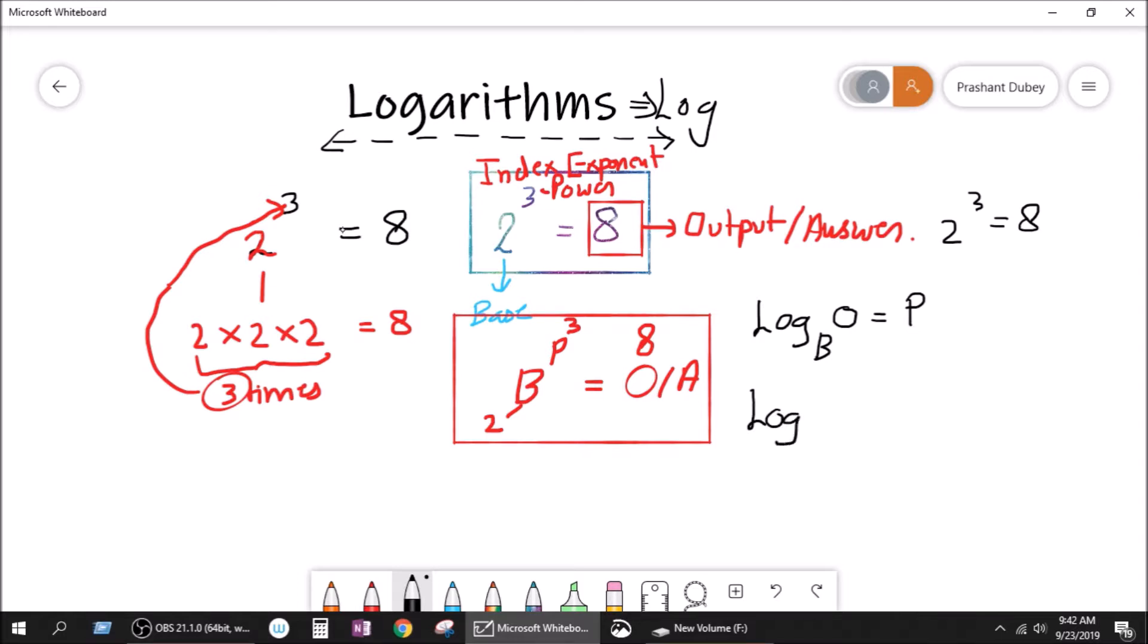Now, we can say log. What is the base? The base is 2. So we can write base 2. What is your output? Your output is 8. So we can easily write 8 is equal to power. What is the power? The power is 3. So we can write 3. Now, this is a log. Simple as that. It is just the same numbers, but written in different order.